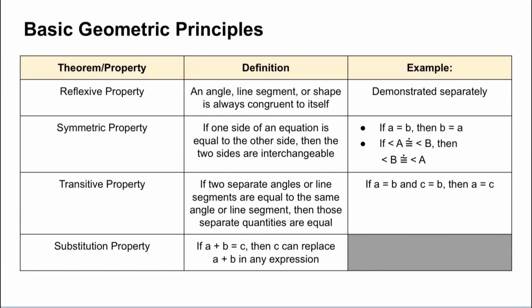The reflexive property states that an angle, line segment, or shape is always congruent to itself. Beyond that definition, I want to focus on this word congruent. That might be a new word for us, especially coming out of Algebra 1. Let me draw the symbol for congruency — it's basically just an equal sign with that little squiggly line on top. Congruency just means equal, but it's specifically when referring to angles or line segments of some geometric figure, like a shape.